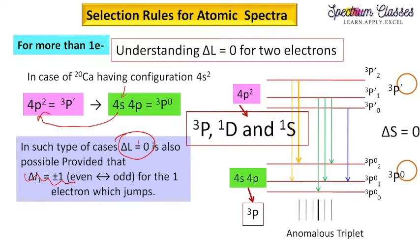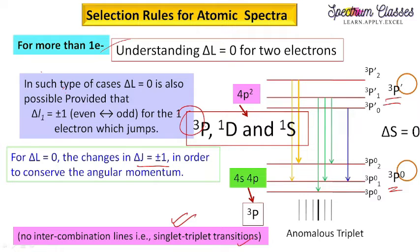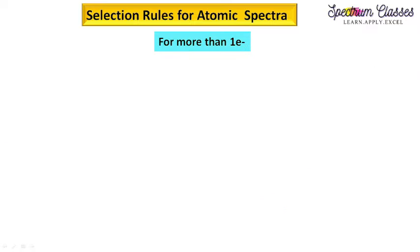As seen in alkali metals, in alkaline earth metals we get an anomalous triplet in the atomic spectra. The intensity rules (discussed in the next video) determine which lines appear darkened/bold. An important point: for lighter elements, ΔS = 0 means inter-combination lines — singlet to triplet transitions — are not possible. Only ³P to ³P or same-multiplicity transitions occur; no ¹D to ³P or ¹S to ³P transitions are allowed in lighter elements.